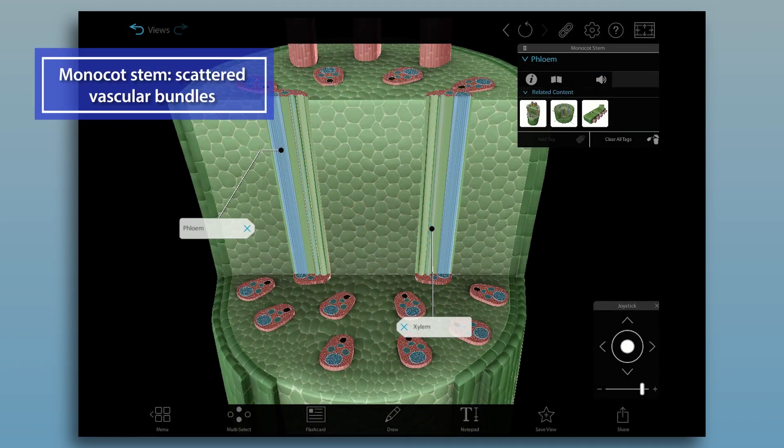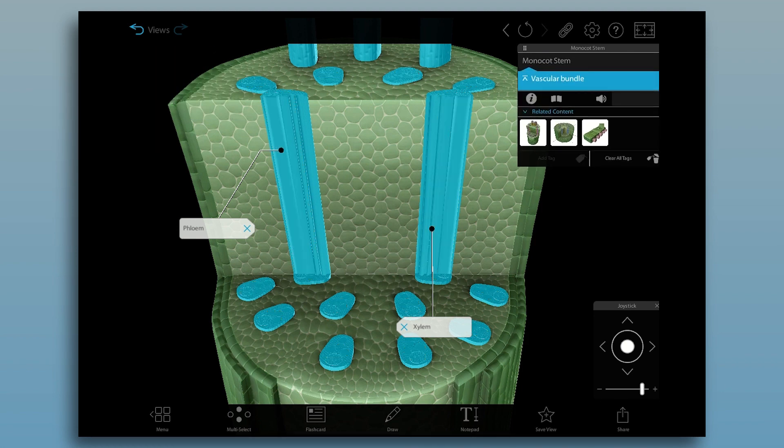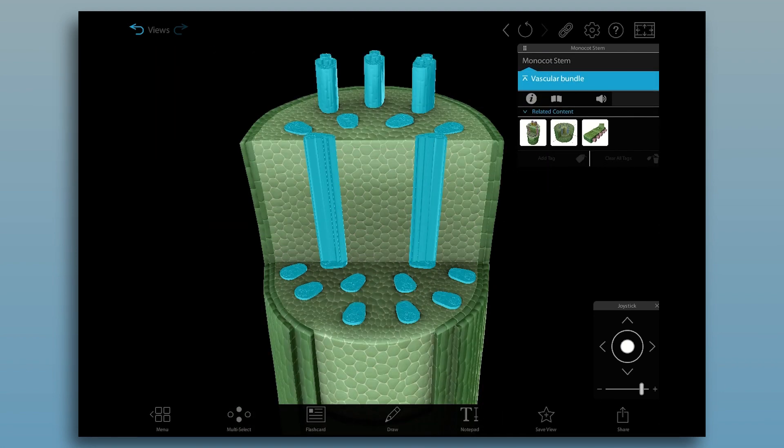In monocot and dicot stems, the xylem and phloem are grouped into vascular bundles. The vascular bundles in monocot stems are scattered throughout the ground tissue.